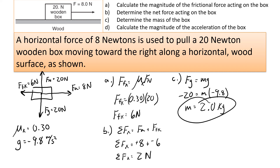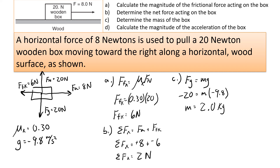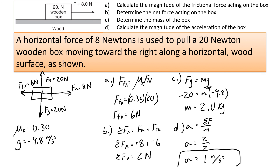Finally, what is the acceleration? Now that we know the mass and the net force, we use Newton's second law: acceleration equals net force divided by mass. That's 2 Newtons divided by 2 kilograms, which equals 1 meter per second squared.